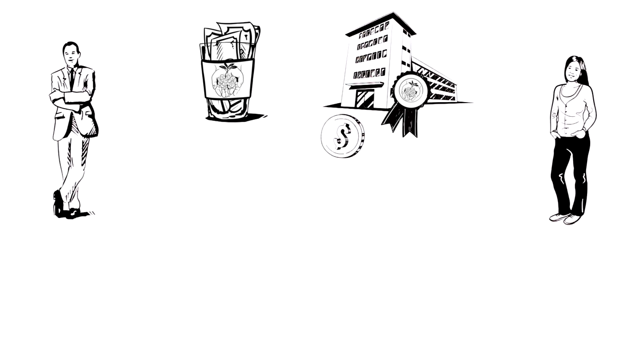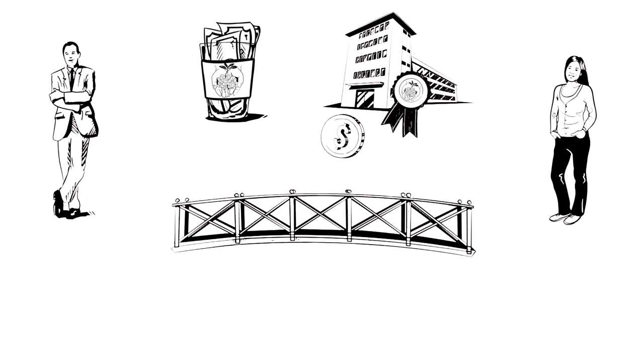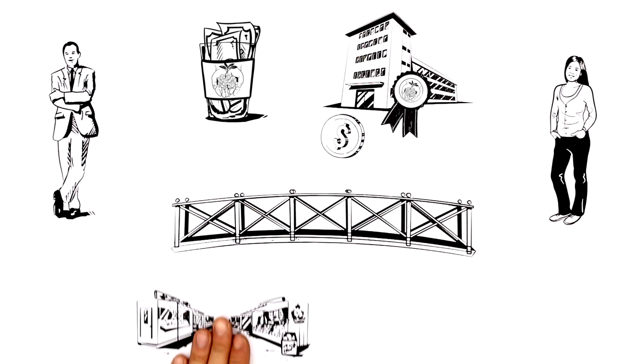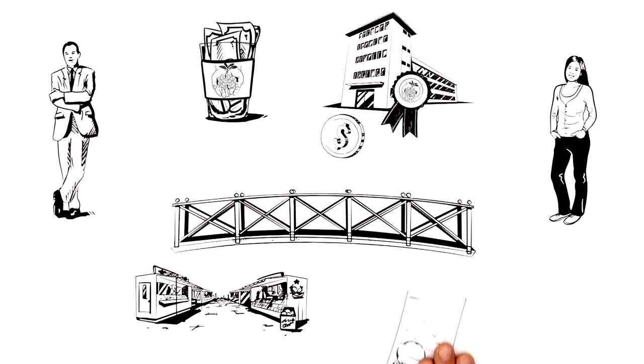The local microfinance institution is the bridge between Mr. Miller and Aurelia. It knows the market and first of all reviews Aurelia's loan application. Only then does it give its investors' money to the small-scale entrepreneur.